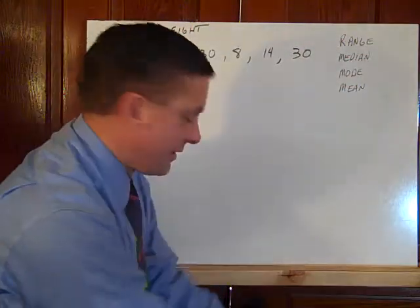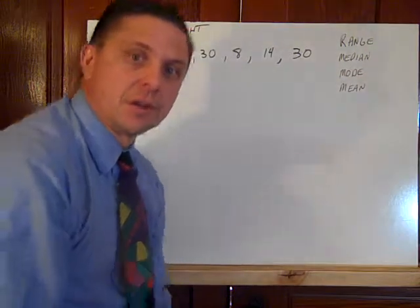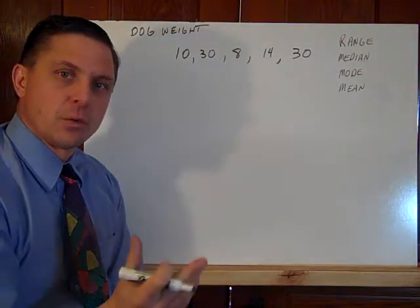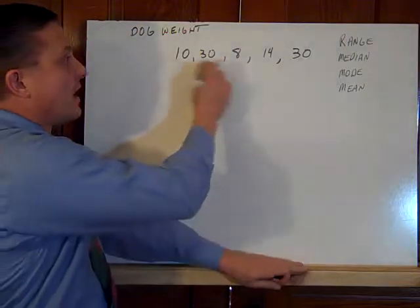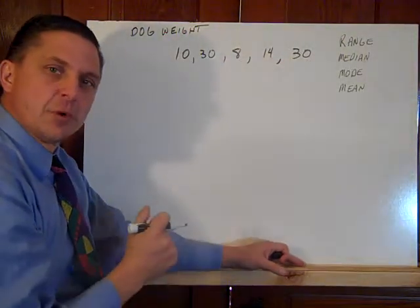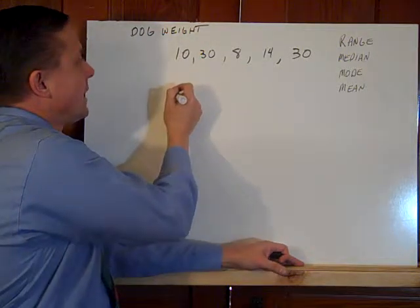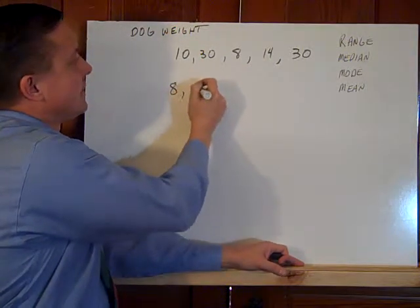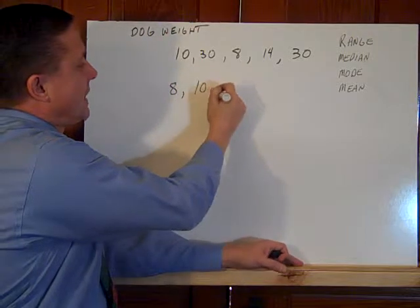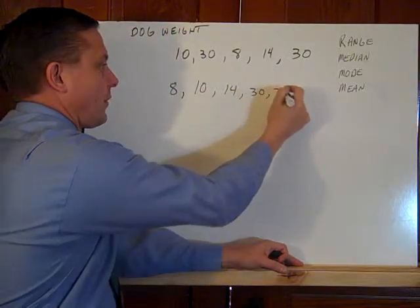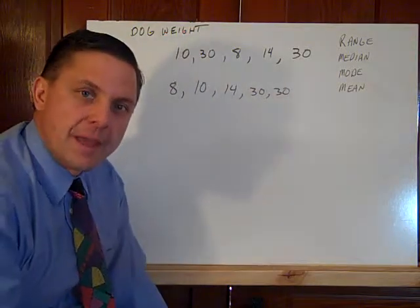So what we're going to do is apply this to sets today. The first set I had here was some dog weights. A veterinarian is going to weigh five dogs. The first thing when you get a set is you want to put it from smallest to greatest. So I think I have an eight, I have a ten, I have a 14, then we have two middle-sized dogs, two 30s. These are all pretty small dogs.